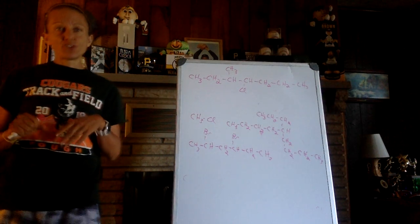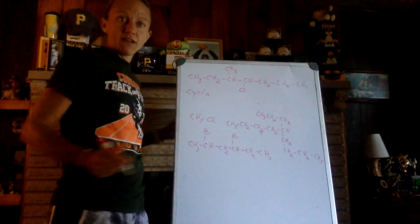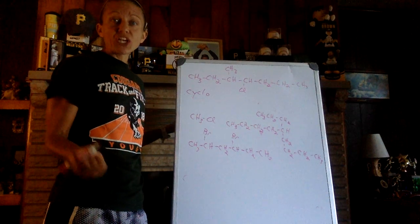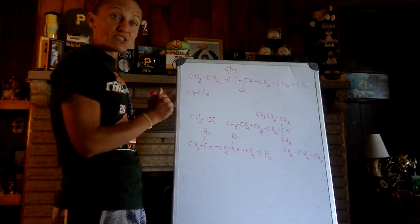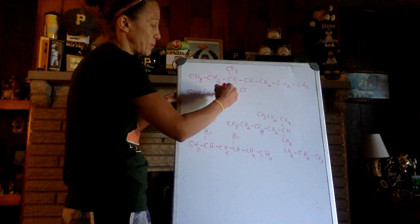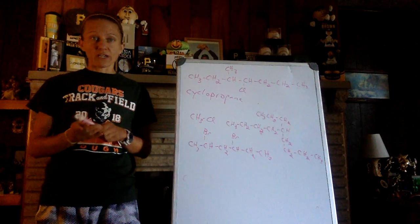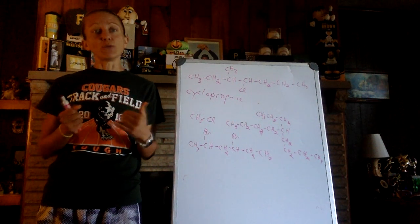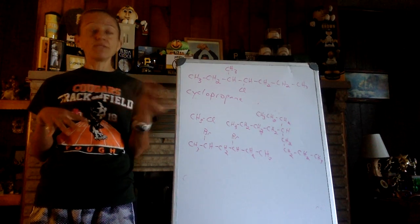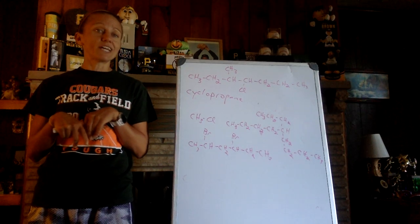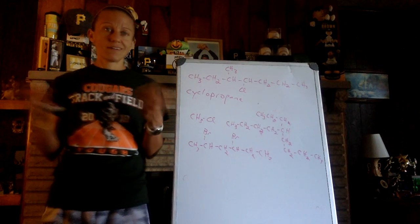So if you look at my geometric shapes, all you're going to do is cyclo plus the name. The three-sided, the triangle, three-sided ring is propane. Three carbons, one in each corner, so cyclopropane. And you follow that same pattern. The square, four carbons, cyclobutane. The pentagon, five sides, cyclopentane, five carbons, one in each corner, and then cyclohexane for your six-sided ring. Not too bad.